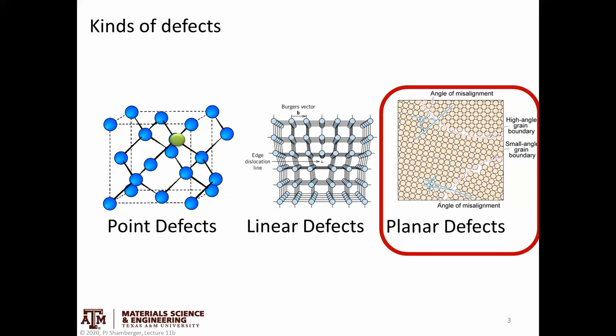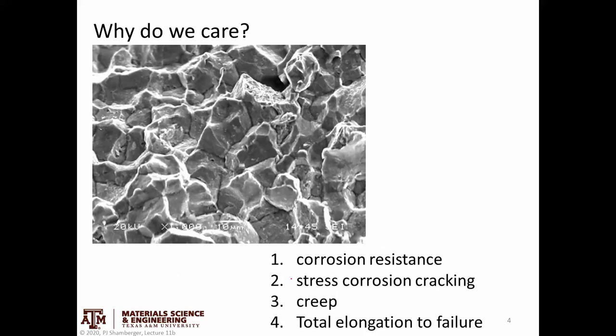We're talking about planar defects. Why do we care? Grain boundaries dominate how a material behaves with certain properties. Particularly, if we think about things like corrosion resistance, stress corrosion cracking, creep, and total elongation to failure, these are all things that are dominated especially by how materials behave along the grain boundaries.